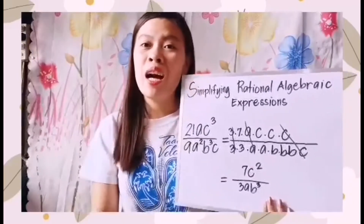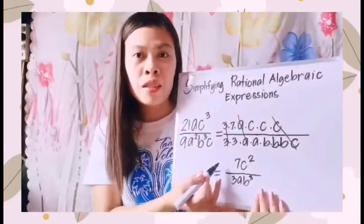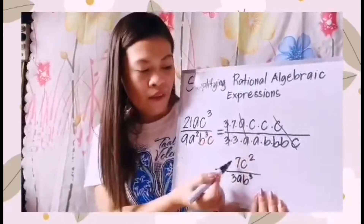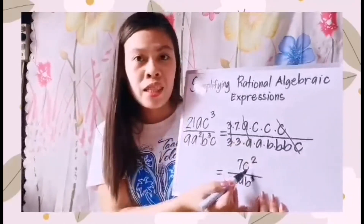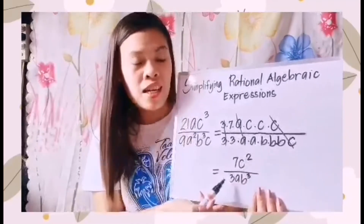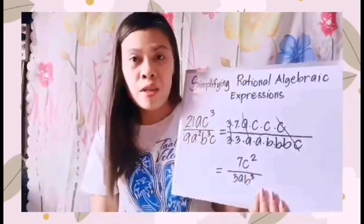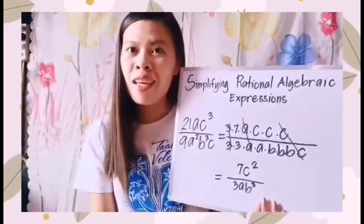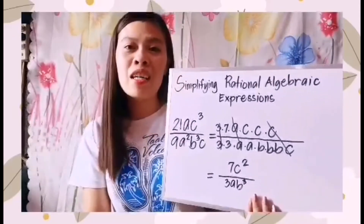Picking up the remaining numbers and variables: we have 7 and 2 c's left, giving us c squared — so 7c squared. Over the denominator, we have 3, a, and 3 b's which is b cubed — so 3ab cubed. That is how easy it is to simplify rational algebraic expressions.